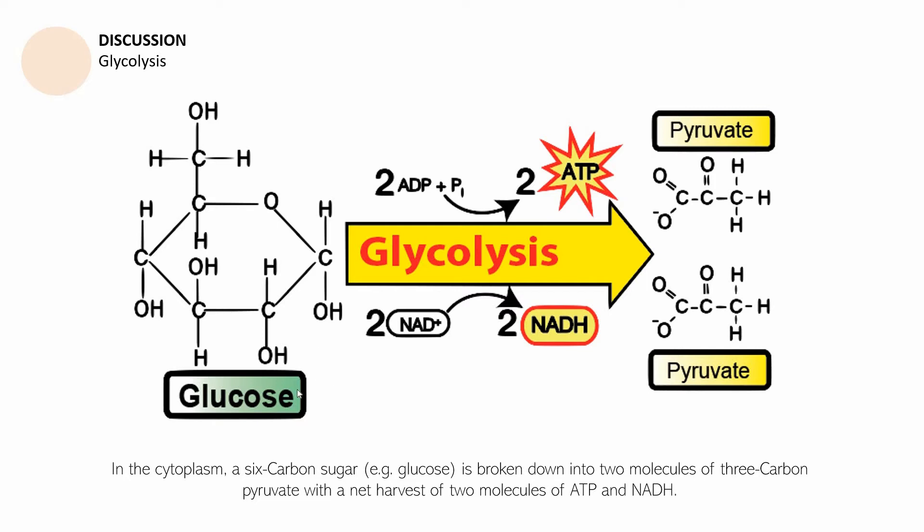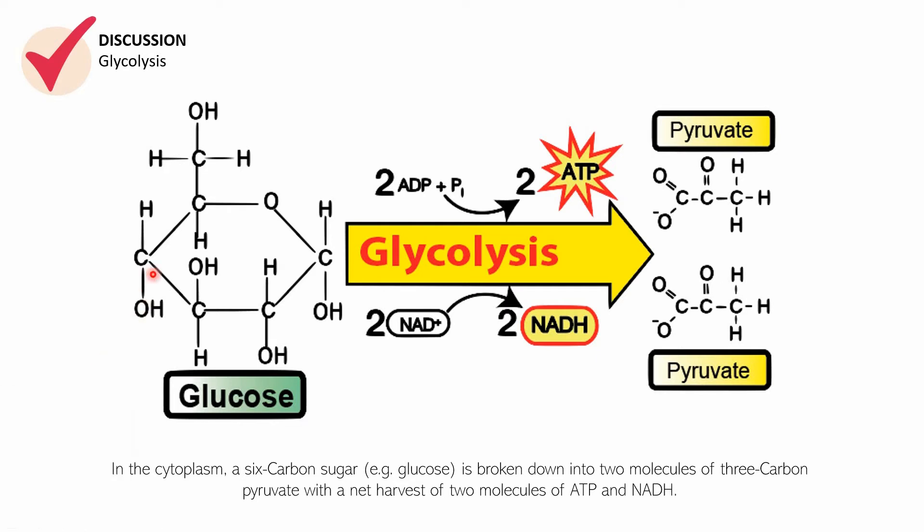So what is it trying to say? Glycolysis happens in the cytoplasm and it happens with the use of glucose. So glucose is a six-carbon molecule as you can see here. It has six carbons, one, two, three, four, five, and six.